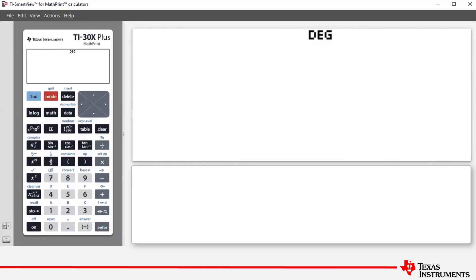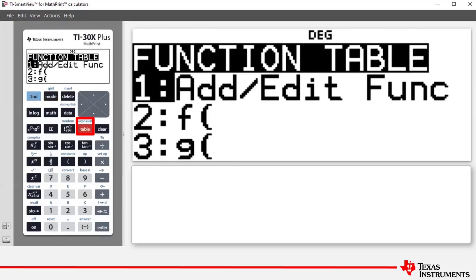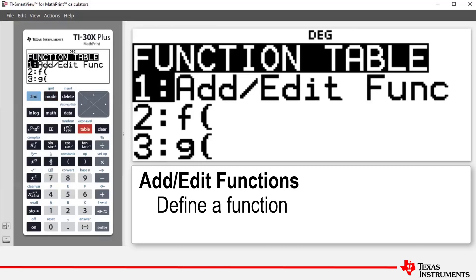To access the feature, press table and you see there we've got addEditFunc which allows you to define a function and generate a table of values.